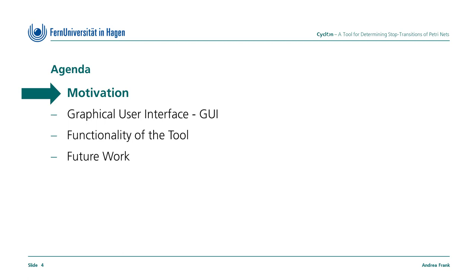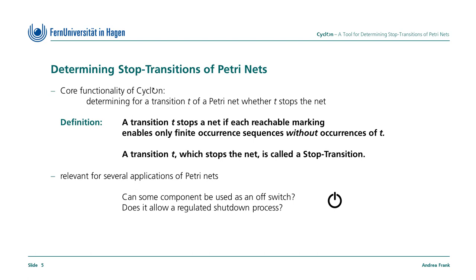First, we come to the motivation for this tool. Before we discuss the tool itself, we would like to consider what this tool was developed for. Its main functionality is to determine for a transition T of a Petri Net whether T stops the net. A transition T stops the net. What does that mean? Roughly speaking, whatever marking we have reached, once we do not allow T to occur anymore, no other transition can occur infinitely often. So T eventually stops the behavior of the net. More precisely, a transition T stops a net if each reachable marking of the net enables only finite occurrence sequences without occurrences of T. We call such a transition a stop transition.